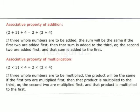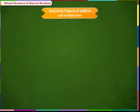Now we see associative property, first for addition. If we add 3 whole numbers, the sum will be the same whether we add the first two numbers first and then add the third, or we add the last two numbers first and then add the result to the first number. Similarly for multiplication, you see the same result in both cases.